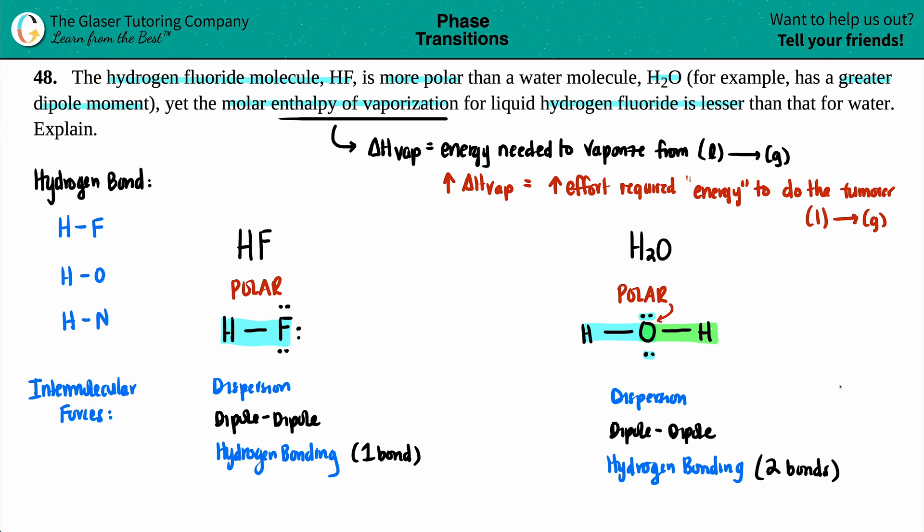And that is why the more chances you can hydrogen bond, so the higher the chances for hydrogen bonding, the higher the delta H vaporization. Even though they said that fluorine is the more electronegative element than oxygen, it all comes down to two possibilities of hydrogen bonding as opposed to just the one.